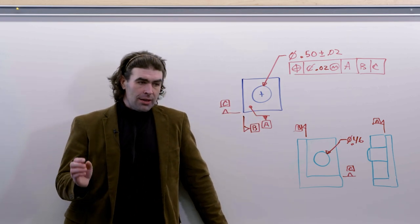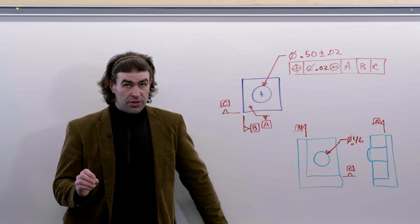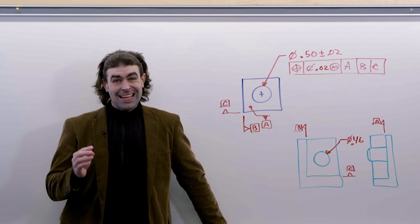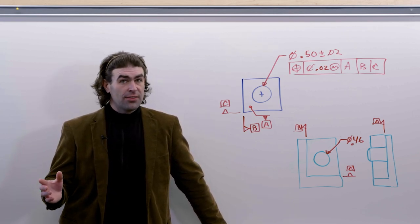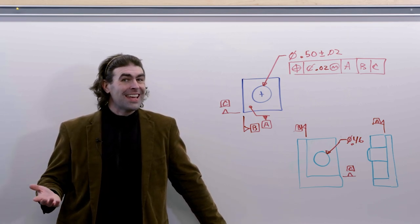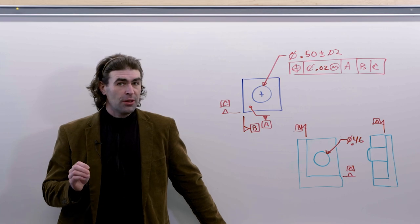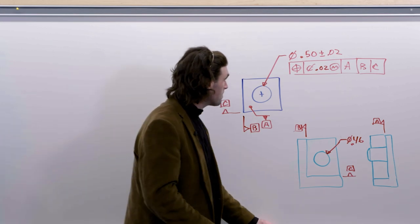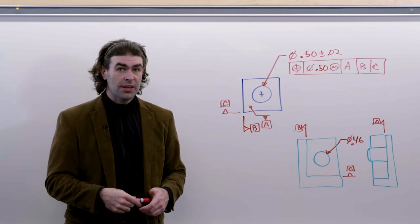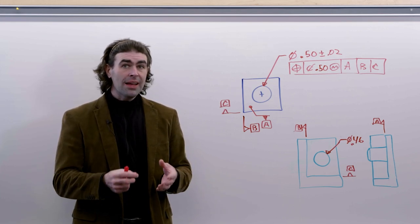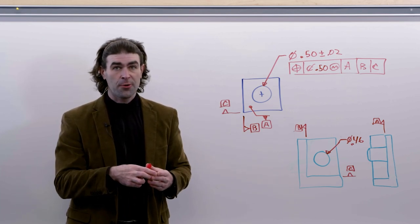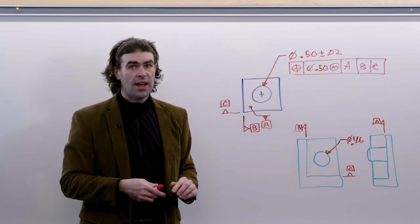Now there are situations where you have the MMC but you can't use the surface method, and the data measurement reporting standard addresses this and makes it very clear. If you have a negative virtual condition, you obviously can't use the surface method - you must use the axis method. Let me show you what I mean. This is unlikely you'll see something on a drawing, but it is - there could be a situation where you could have a hole that could be at a huge tolerance zone, but you want to control the size of the hole.